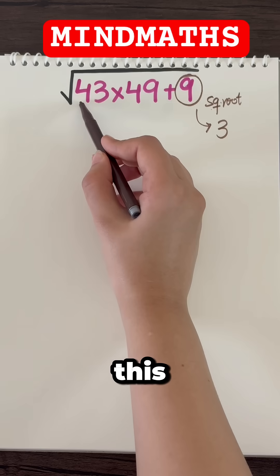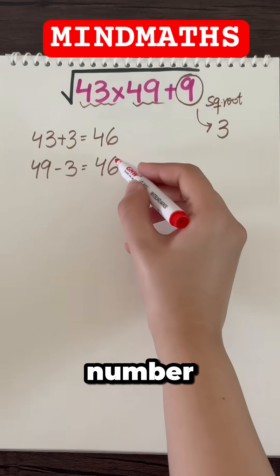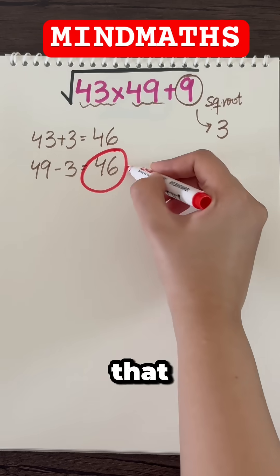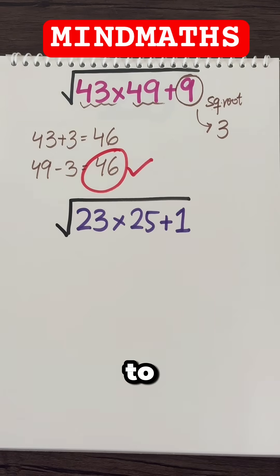Now either add this to the first number or subtract it from the second number. Both will give the same number and that will be your final answer. Moving to another example.